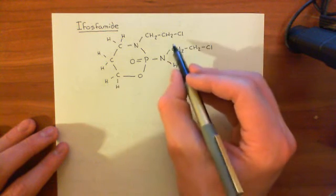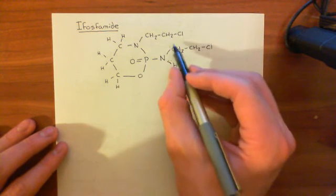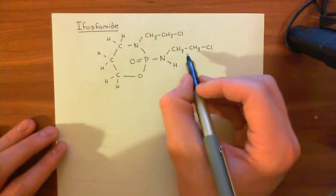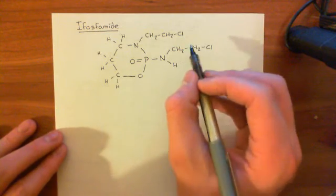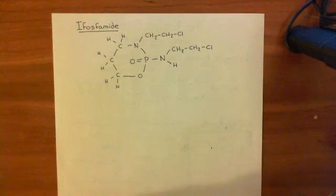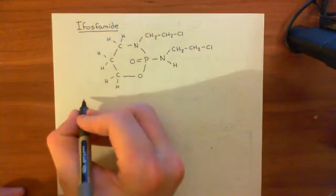This drug does indeed have two chloroethyl groups, as it must. So this is the drug ifosphamide, and we'll do one more.